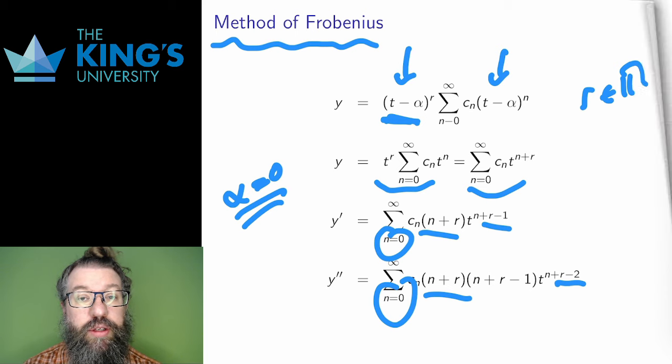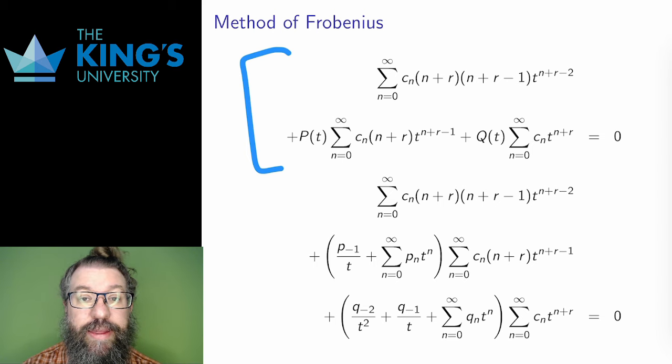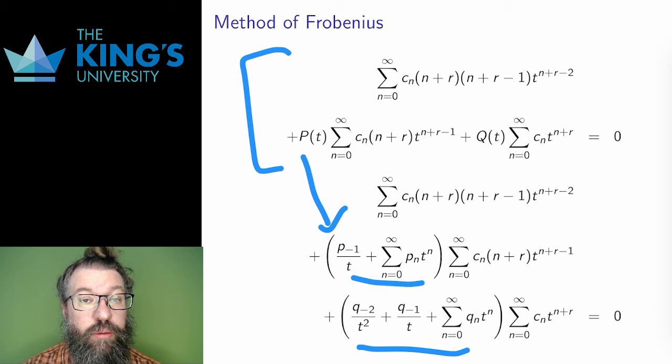Then I put these all into the DE. After putting it in, I'll put P and Q into their Laurent forms. Again, the condition here is that this is a regular singular point, so P and Q have these series forms. And that's key in this technique. Without these series forms for P and Q, the whole technique doesn't work. That said, this is still a mess, particularly since I have a product of series in both the second and the third terms.